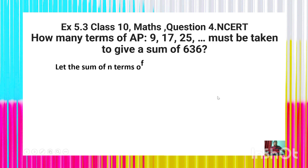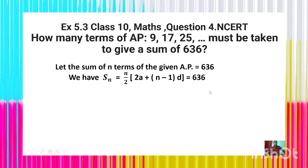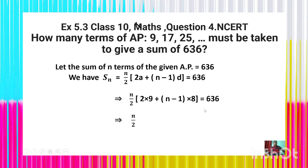Let the sum of n terms of the given AP equal 636. Using the formula Sₙ = (n/2)[2a + (n−1)d] = 636. Substituting a = 9 and d = 8, we get (n/2)[2×9 + (n−1)×8] = 636, which gives (n/2)[18 + (n−1)×8] = 636.